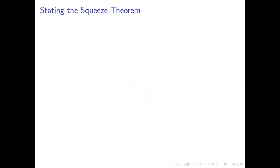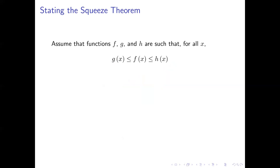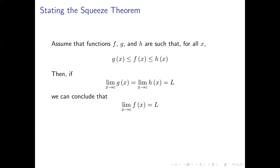That idea is what's behind the squeeze theorem, and the name gives away what's going on. So formally: if we've got three functions f, g, and h, with f(x) between g(x) and h(x) for all values of x, and if the limit as x approaches c of g(x) equals the limit as x approaches c of h(x) — call that limit L — then we can conclude that the limit as x approaches c of f(x) is also equal to L.